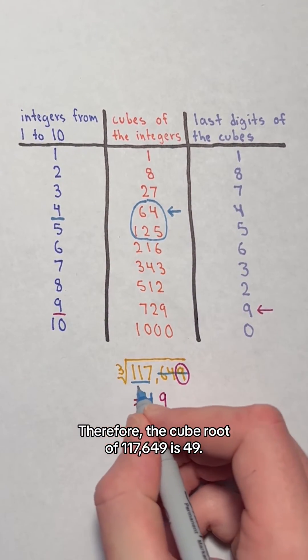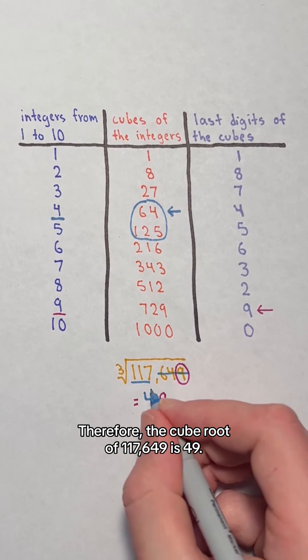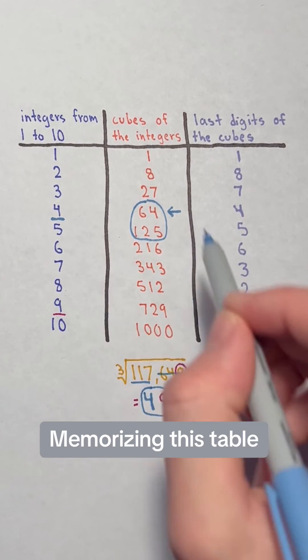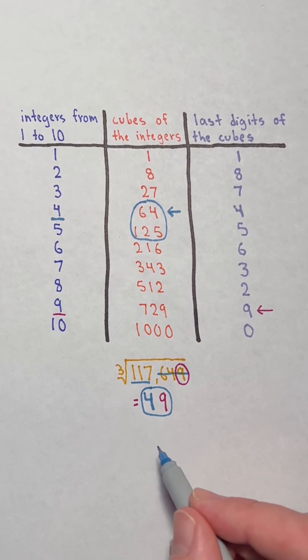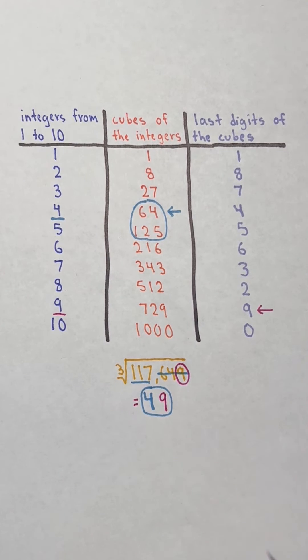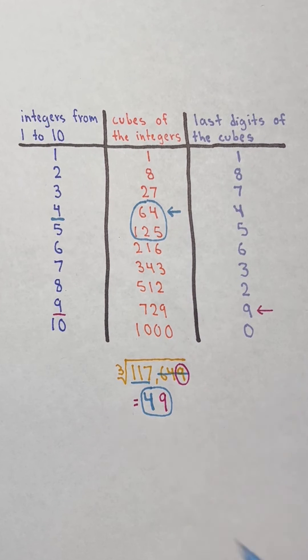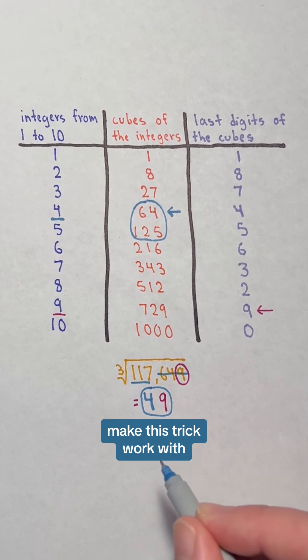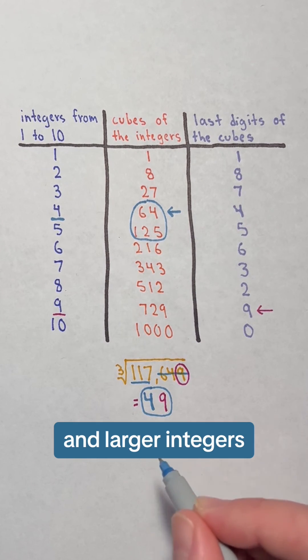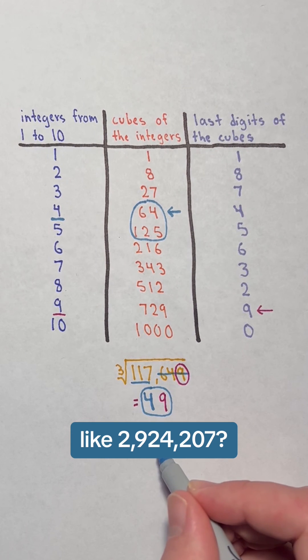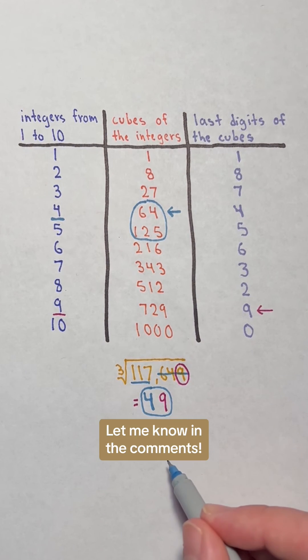Therefore, the cube root of 117,649 is 49. Memorizing this table can help you find perfect cube roots of up to 1 million in your head. Keep in mind that you must know the number is a perfect cube. Can you figure out how to make this trick work with larger integers like 2,924,207? Let me know in the comments.